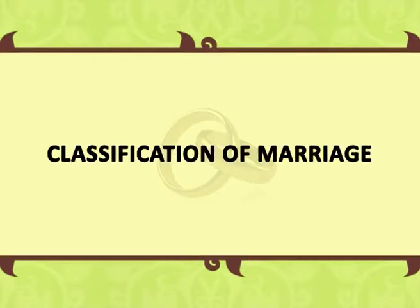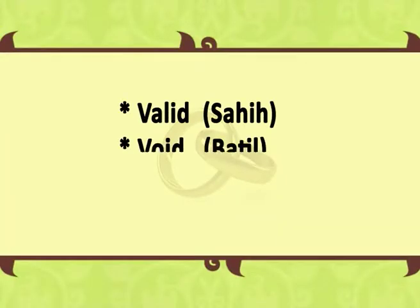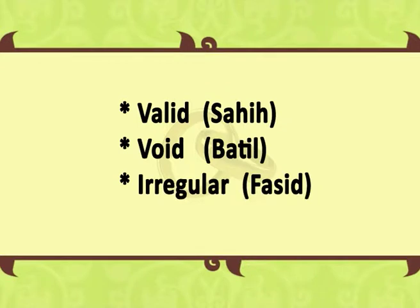Classification of marriage: Islamic law provides certain legal requirements for the solemnization of marriage. Marriage with certain persons is allowed and with some others it is disallowed. On the basis of the fulfillment of these requirements, marriage under Muslim law has been classified into three classes: number one, valid i.e. Sahih; number two, void i.e. Batil; number three, irregular i.e. Fasid.